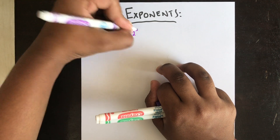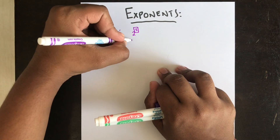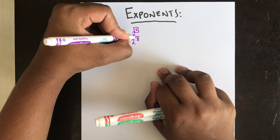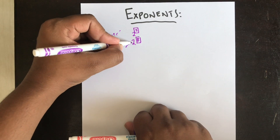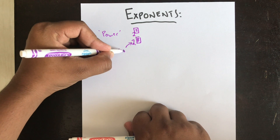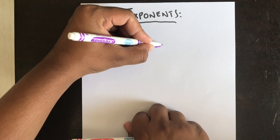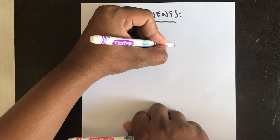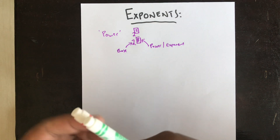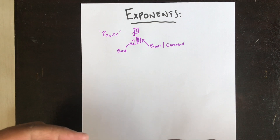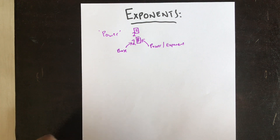For example, 2 power 2 — this 2 becomes the exponent. 2 power 8 — this 8 becomes the exponent. In mathematical terms, the first 2 is the base and the 8 is the power or the exponent. It's a very easy topic, so let's start off with the properties of exponents.